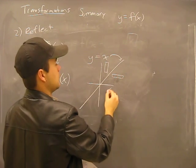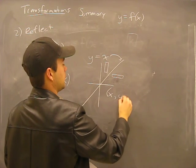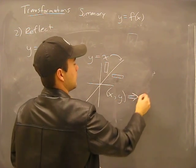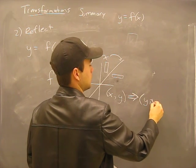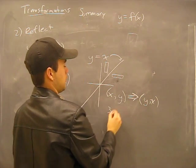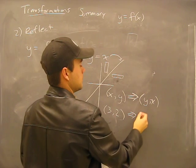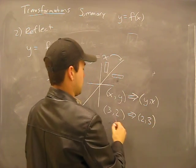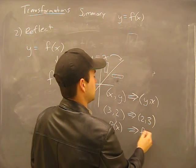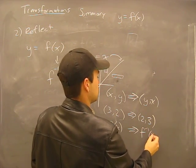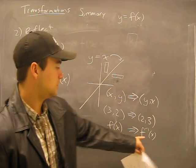What happens is that what we had in our initial point x y, in the reflection would be y x. Like a three two would become two three as you go into the inverse.